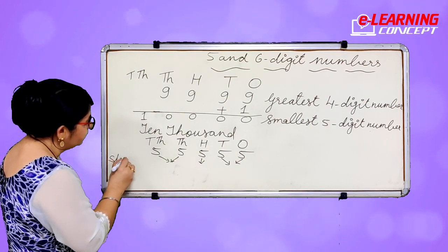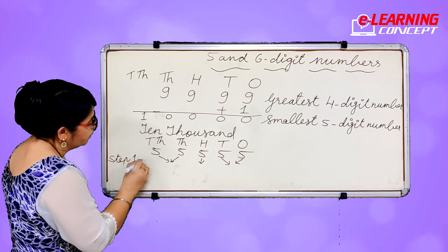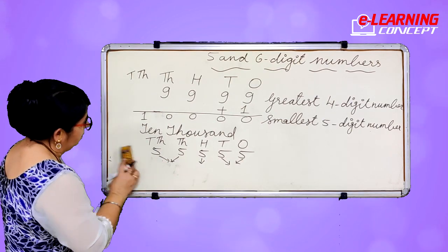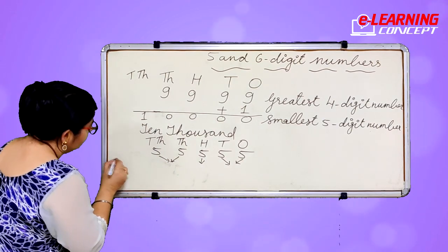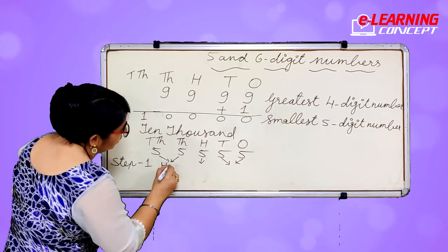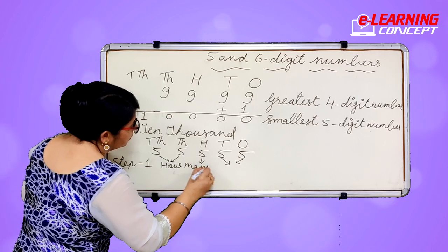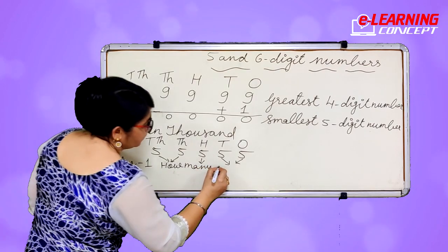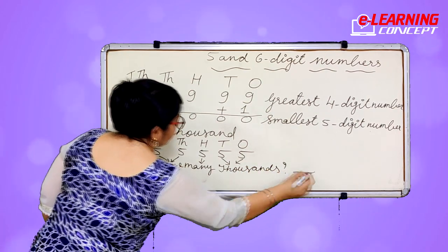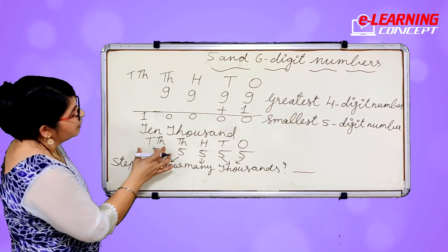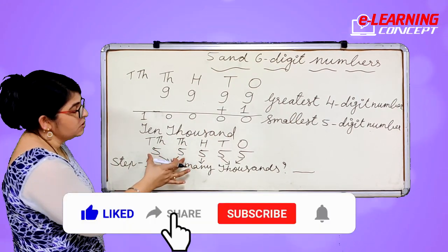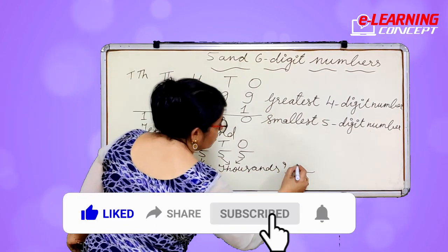Step 1: how many thousands? This is the 10,000 place and this is the 1,000 place, so we take them together. This is 55, so 55 thousands.